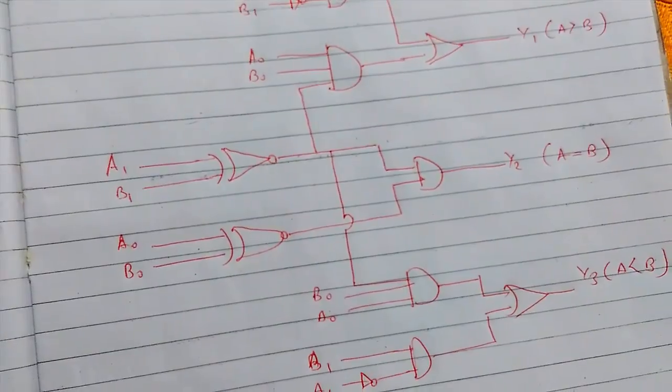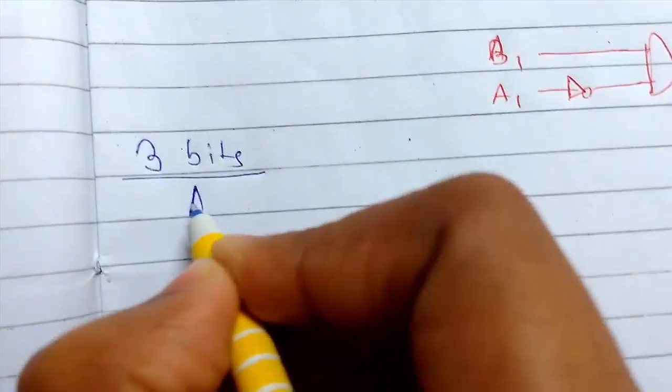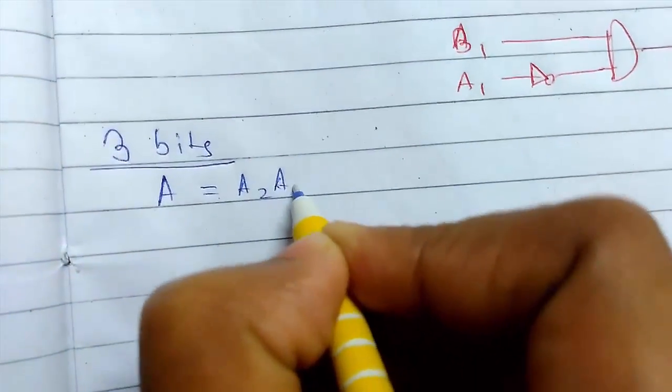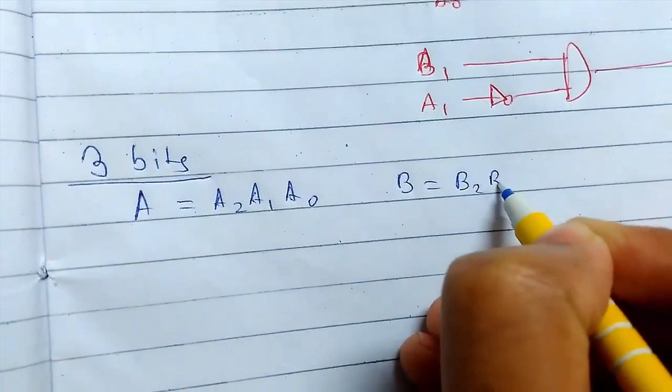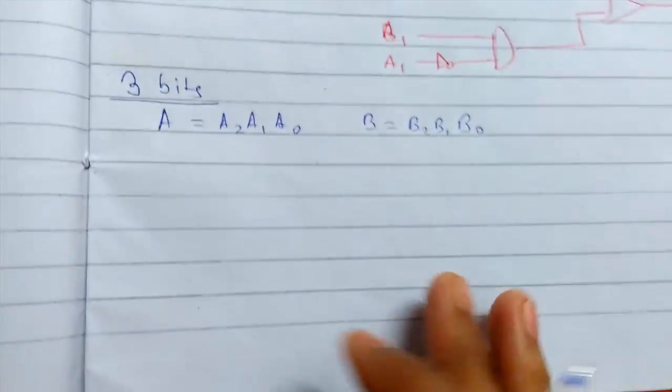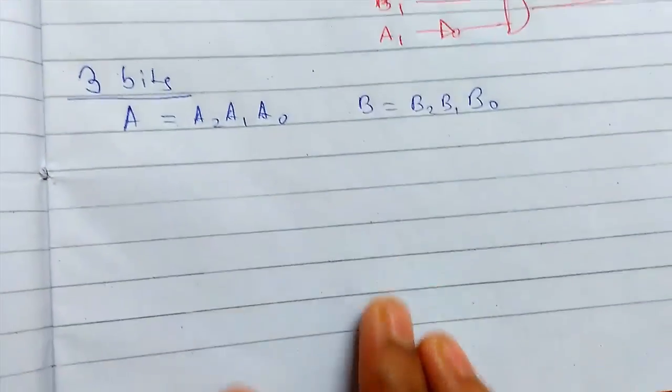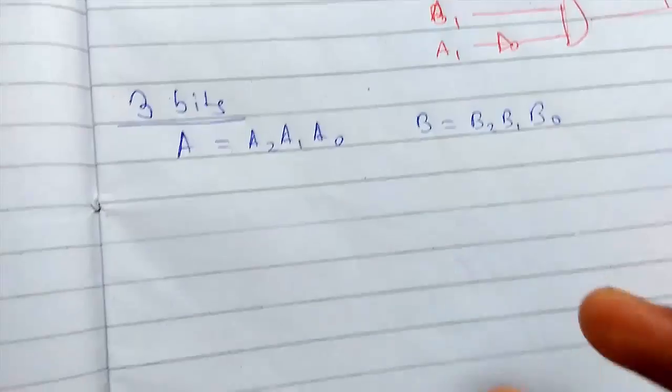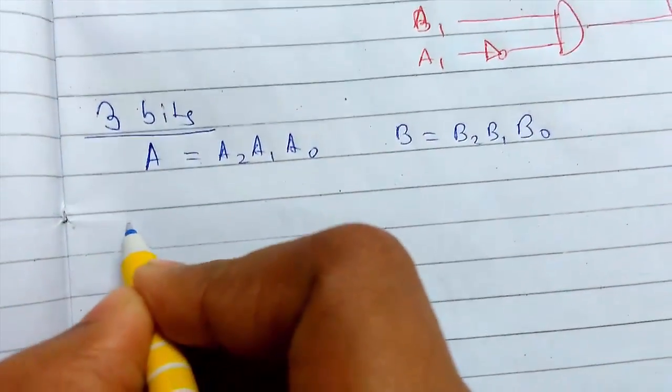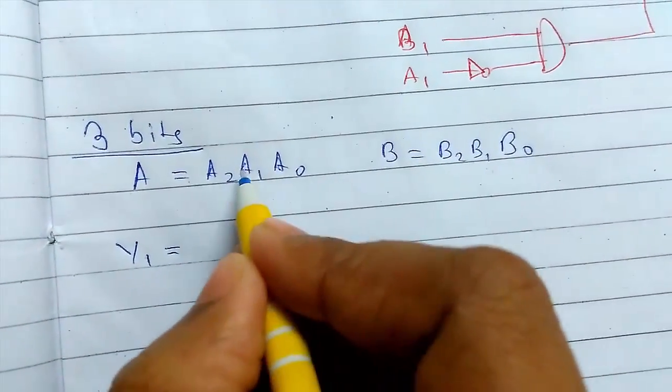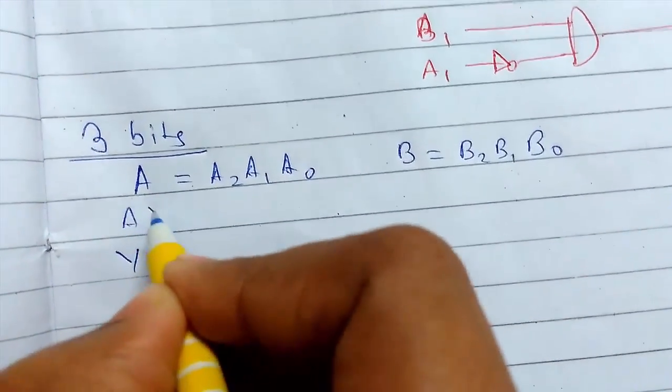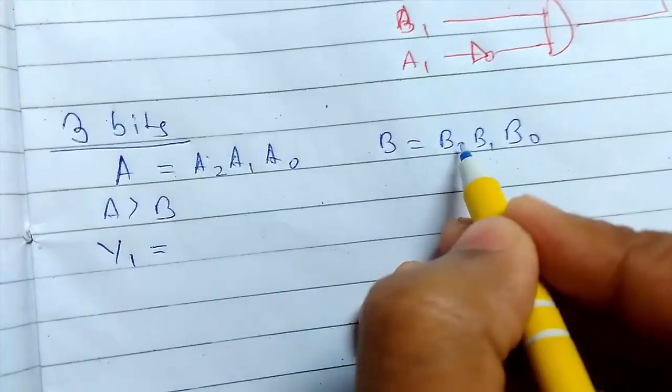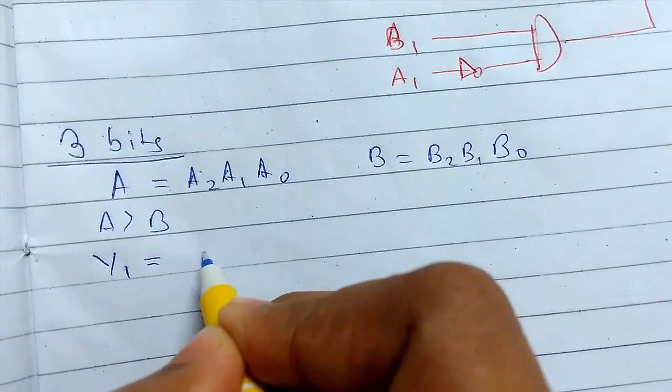Now I will show you for three bits. A will have something like this and B will have something like this. I will not be drawing the circuit because that is not required for these three bits, only for two bits it is important. Suppose for greater case, we can see suppose y1 is a greater case when A is greater than B. Either this can be greater than this, so we write like A2 greater than B2.